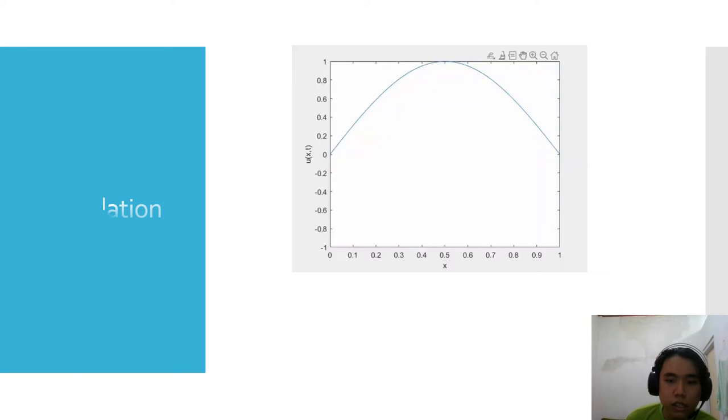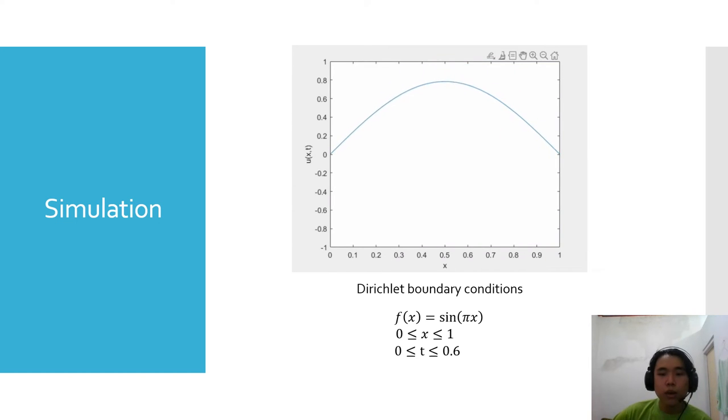So the first case, I use the Dirichlet boundary condition with the function sin pi x and x interval from 0 to 1, and then time interval from 0 to 0.6, and this is how it looks.